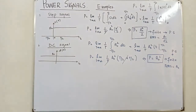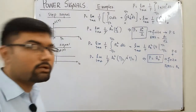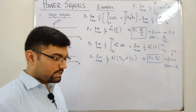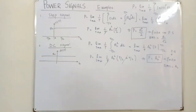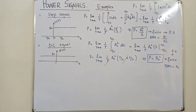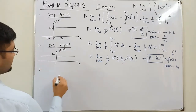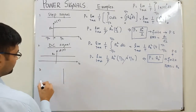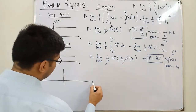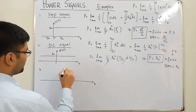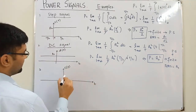That is for a DC signal. These are the two properties I told you in the previous video. Now let's look at an example with a clock pulse — a periodic signal. Let's say we have a clock pulse where c(t) represents the signal along the time axis.